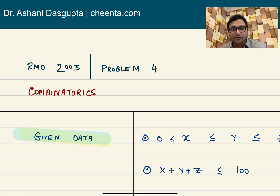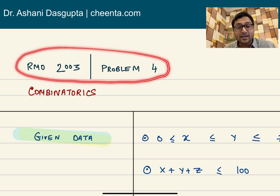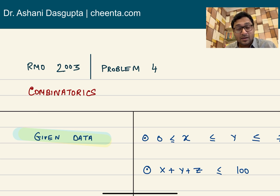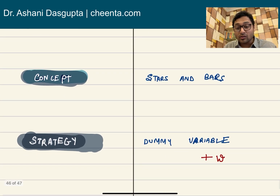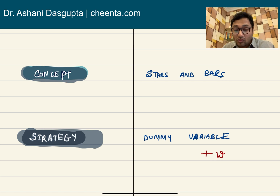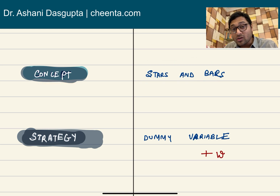Hello everyone, this is Oshani Rajgupta from Chinta. Today we will be learning a problem from the Regional Mathematics Olympiad 2003 — problem number four, from combinatorics. But as usual, this will not be just a solution video. We will learn about the underlying concept in greater detail. Even if you have not seen this before, I will talk about it in some detail so you'll be able to learn it from here.